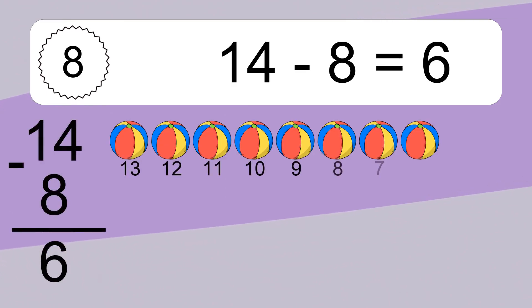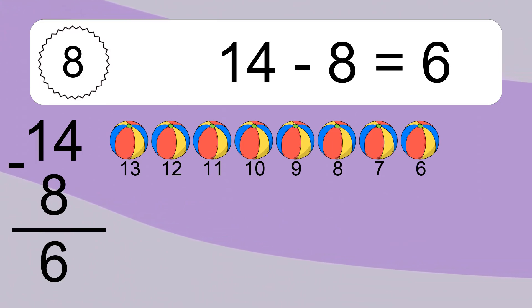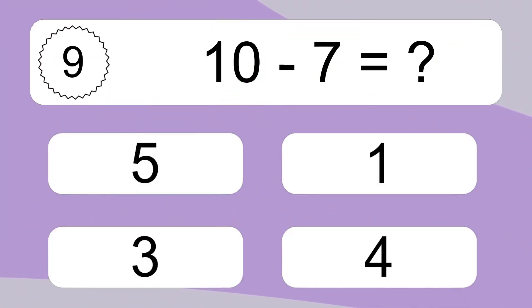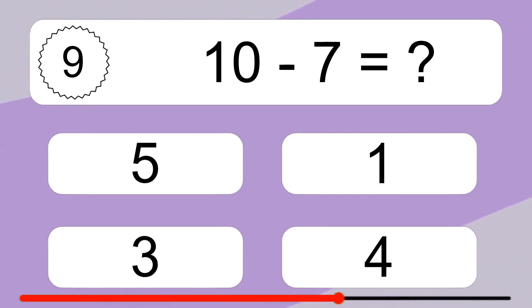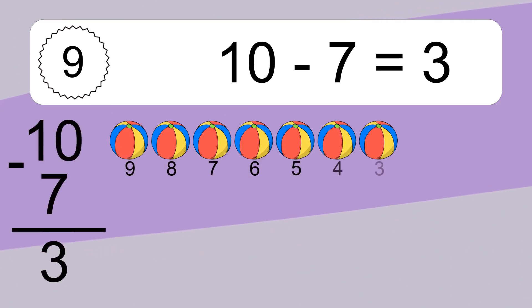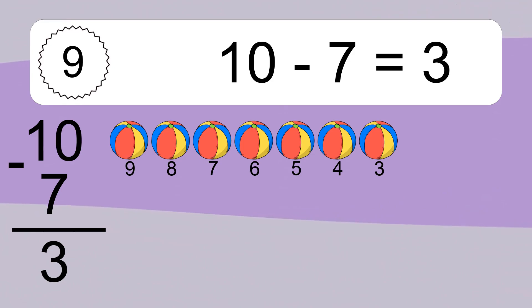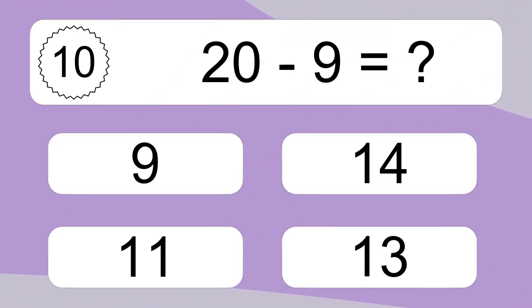Ten minus seven equals six. Let's count it: thirteen, twelve, eleven, ten, nine, eight, seven, six. Ten minus seven equals three. Let's count it: nine, eight, seven, six, five, four, three. Twenty minus nine equals what?